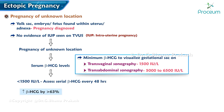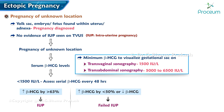A rise in beta-hCG by more than 63 percent indicates an intrauterine pregnancy. If the rise is less than 50 percent or falls, it is a failed intrauterine pregnancy. A rise in beta-hCG of more than 50 percent but less than 63 percent is indicative of ectopic pregnancy.